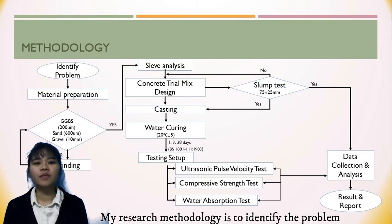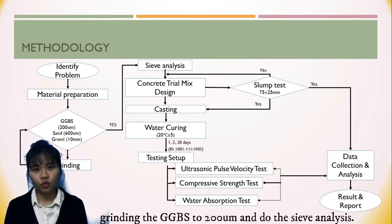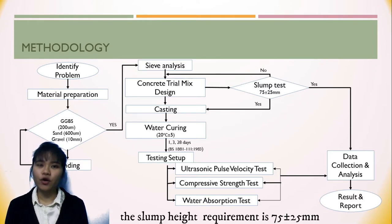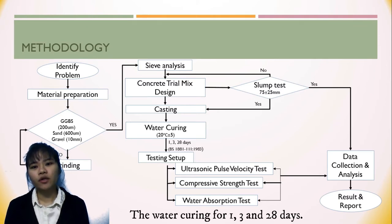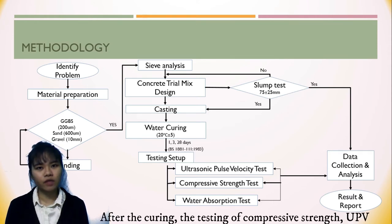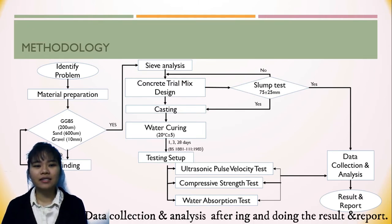My research methodology is to first identify the problem, then do the material preparation, which includes grinding the GGBS into 200 micrometers and doing the sieve analysis. After that, doing the slump test — the slump height requirement is 75 plus or minus 25 millimeters. Next, water curing is required for 1, 3, and 28 days. After curing, testing of compressive strength, UPV, and water absorption is needed. The data correlation analysis is started after testing, followed by results and report.